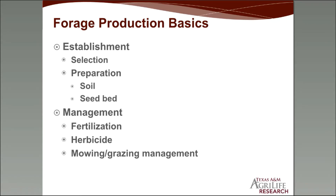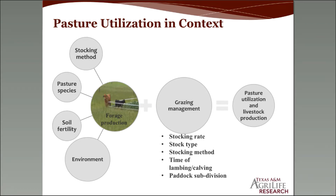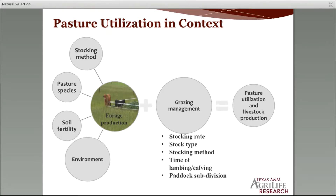This chart helps to show where we are in relation to all the things that go into the science and art of managing pastures. In order to have ideal and maximum forage production, you consider your stocking method, mowing timing, the species growing there, soil fertility, and your environment. Add to that your grazing management — stocking rates, type of livestock, time of lambing or calving, and paddock subdivisions for rotational grazing — and that's when you're able to influence pasture utilization and livestock production.